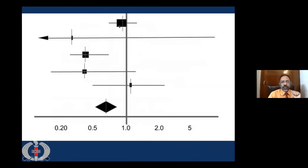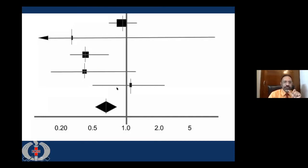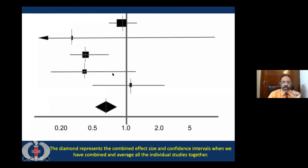Once we have added all the studies in the forest plot, we make a diamond at the bottom. This diamond is the statistically calculated summary of all the studies. The diamond has the same properties: the width of the diamond is the confidence interval of the summary statistic, and where the diamond lies is the result of the summary statistics. Most of the time, the diamond's width will be smaller than the width of individual confidence intervals. The diamond represents the combined effect size and confidence interval when all individual studies are averaged together.